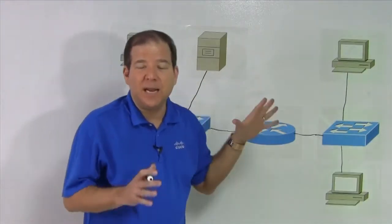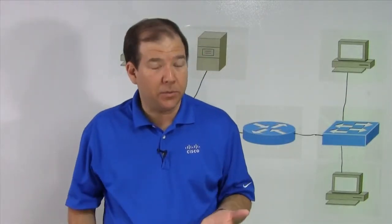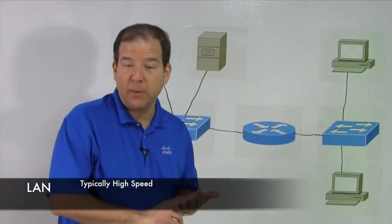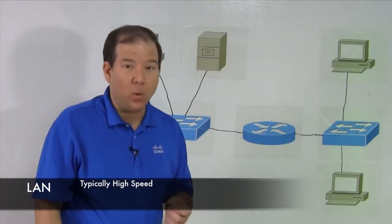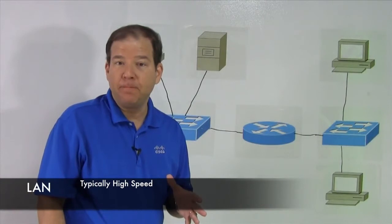And that's an example of a LAN, a very basic local area network. To sum up some of the characteristics, a LAN is typically high speed. With these switches, they can have 10 megabit per second ports, 100 megabit per second ports, 1 gigabit, 1 billion bits per second. That's supported.